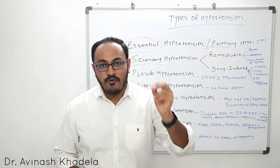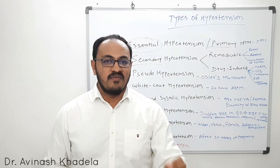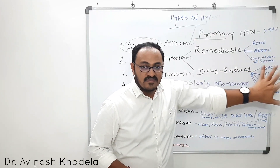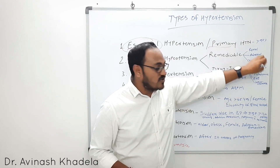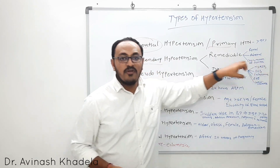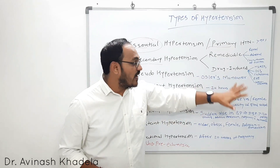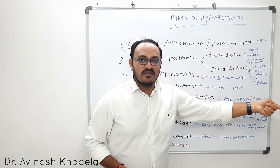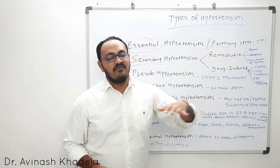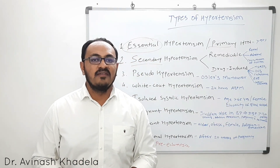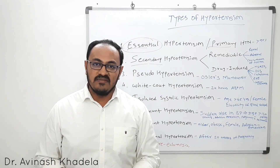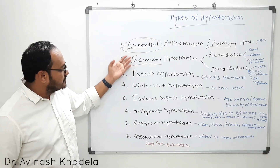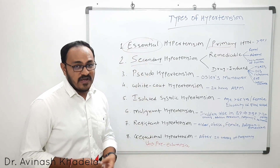Corticosteroid use over a longer duration also leads to a rise in blood pressure. When we stop taking these drugs, there will be normalization of blood pressure — that is why it is known as secondary hypertension. If we remove the cause of blood pressure elevation, blood pressure normalizes and we can avoid anti-hypertensive drugs if blood pressure is no longer fluctuating.